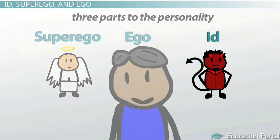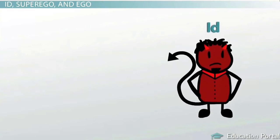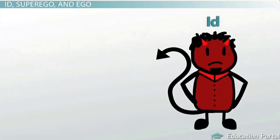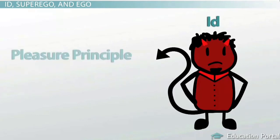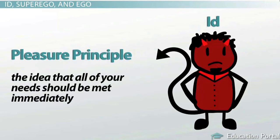The id is the biological component of the personality and includes your instincts. The id operates in our unconscious mind. It is like the little devil sitting on the cartoon character's shoulder that's always selfish and needy. It operates according to the pleasure principle — the idea that all of your needs should be met immediately.